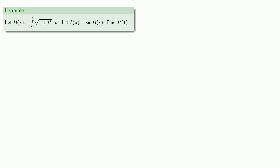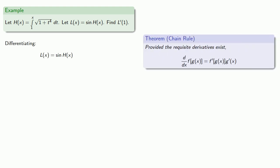Or let's take another function. Let l of x be the sine of h of x, and let's find l prime of 1. So again, using the chain rule, the derivative of l of x will be cosine of h of x times h prime of x.